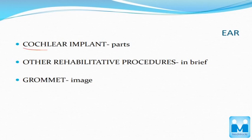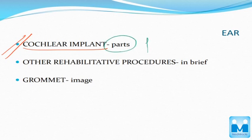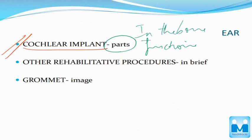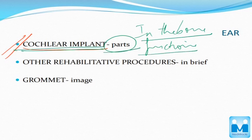In rehabilitative and procedural topics, the cochlear implant is the most important. You have to know the parts and their functions — which components are external and which are within the bone. You have to know the parts in detail for cochlear implants.